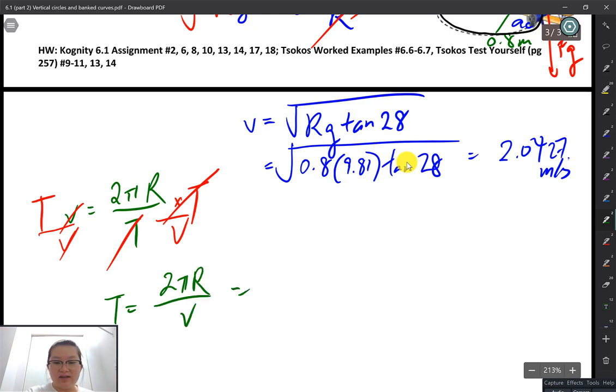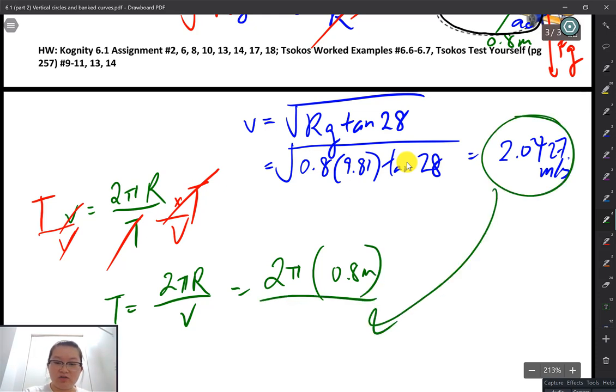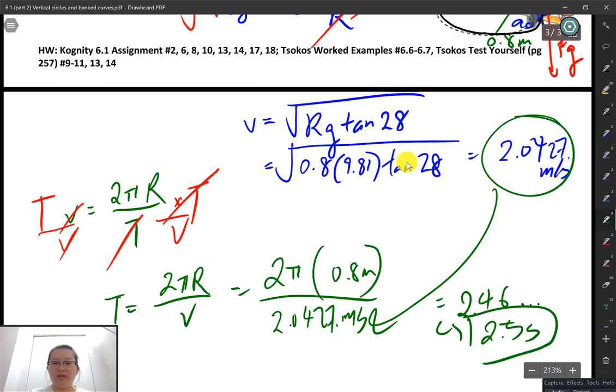So I can now put in the rest of this one. 2πR radius is... What's the radius? 0.8 meters. And then the velocity, the tangential speed is just 2.0427 dot dot meters per seconds. So let's do 2 times π times 0.8 divided by my answer. I get 2.46 dot dot dot. And rounded to two sig figs is 2.5 seconds for my period.